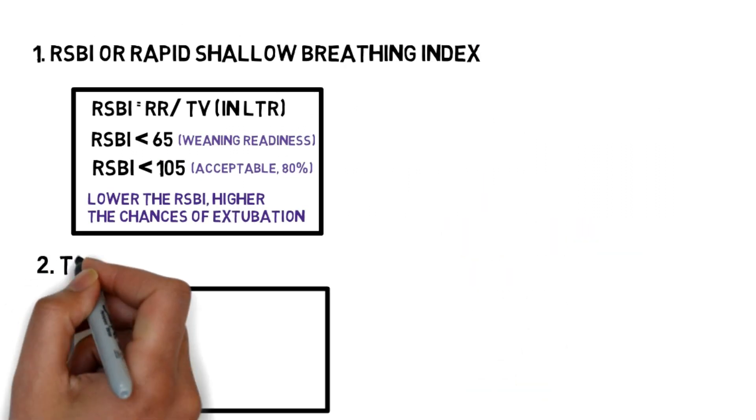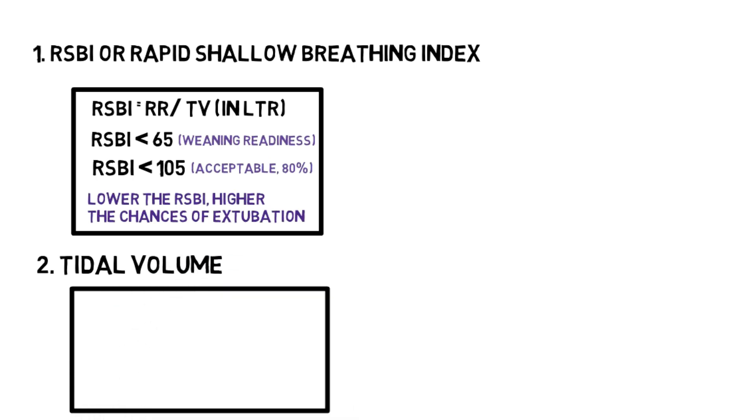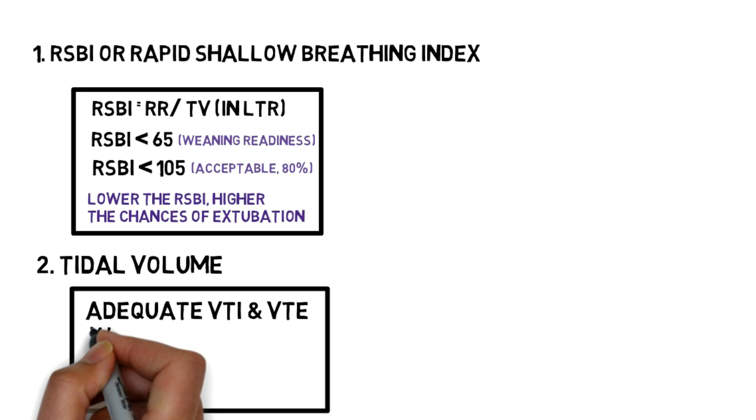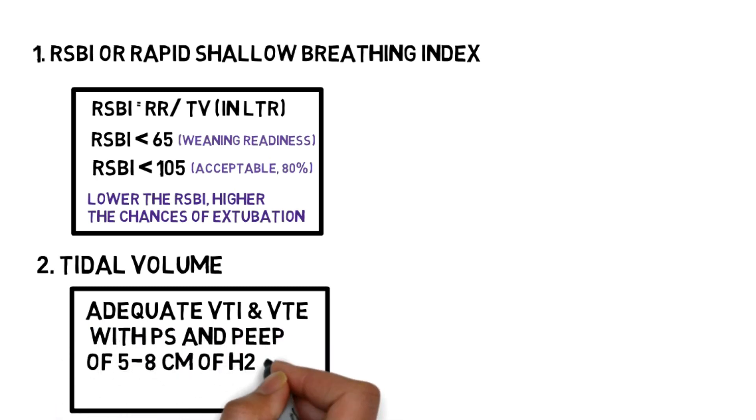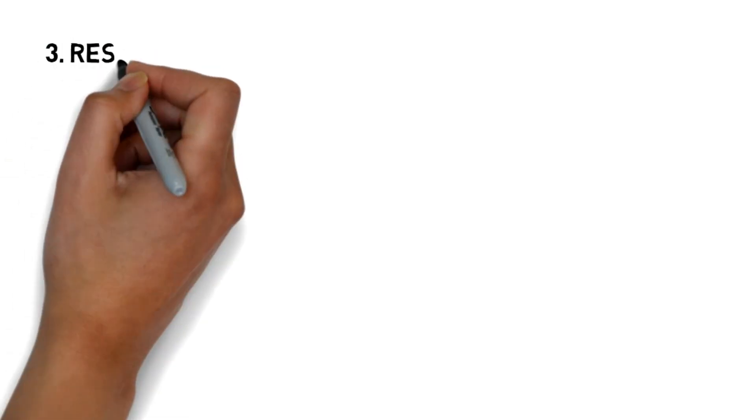The second criteria is tidal volume. Inspiratory and expiratory tidal volume should be adequate with minimal pressure support and PEEP of 5-8 cm of water or less. Adequate tidal volume should be at least 6 ml per kg of predicted body weight.